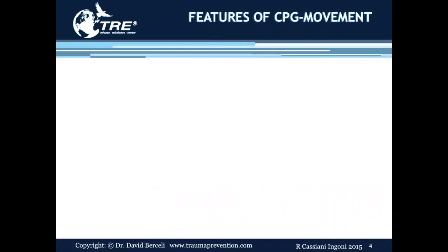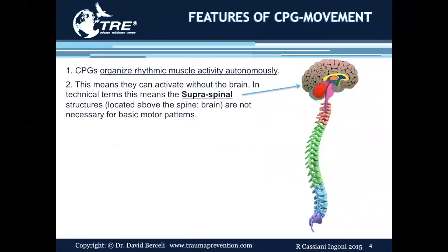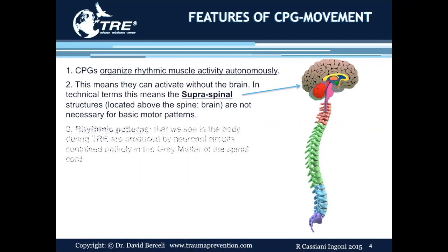Let's look at the features of central pattern generator movement. First, it's important to understand that central pattern generators organize rhythmic muscle activity autonomously. This means that they can activate without the brain. In technical terms, this means the supraspinal structures — the structures located above the spine, which are the brain — are not necessary for basic motor patterns. The rhythmic patterns we see in the body during the TRE process are produced by neuronal circuits contained entirely in the gray matter of the spinal cord.